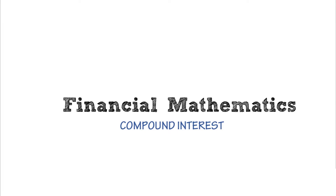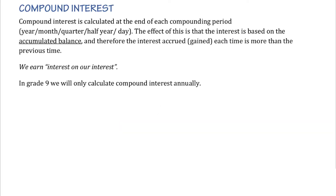Today we're going to be looking at doing this a slightly longer way, but it shows us that we really understand what compound interest means. Then tomorrow we'll look at using the compound interest formula — the shortcut for doing these problems. We calculate interest at the end of each compounding period, which could be per year, per month, per quarter, half year, or even daily.